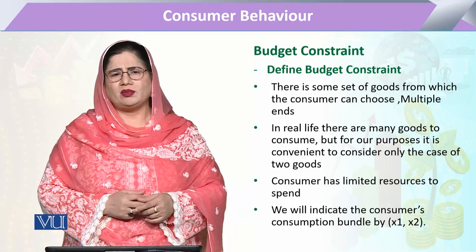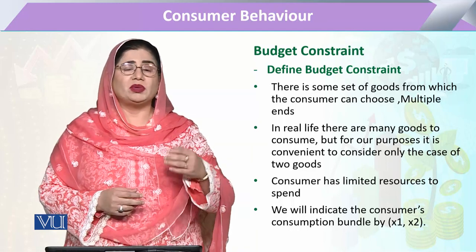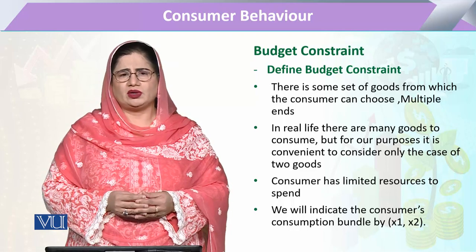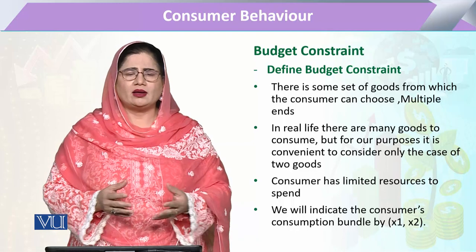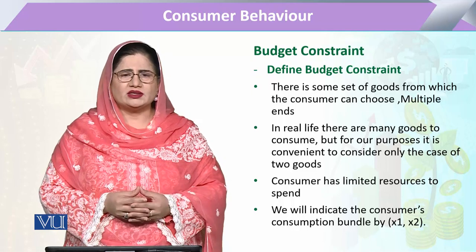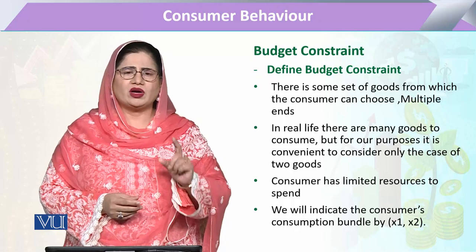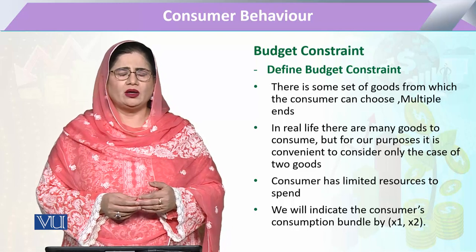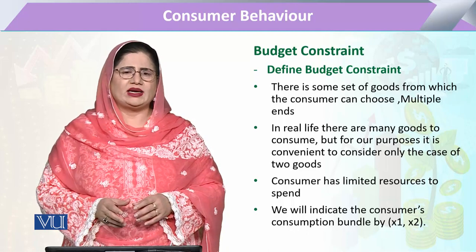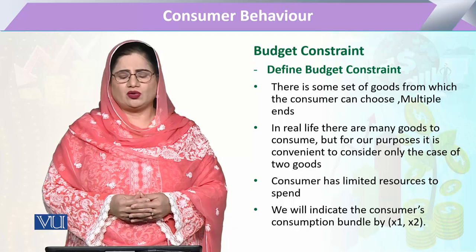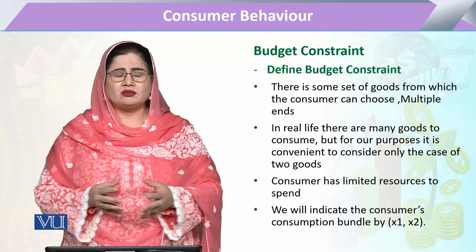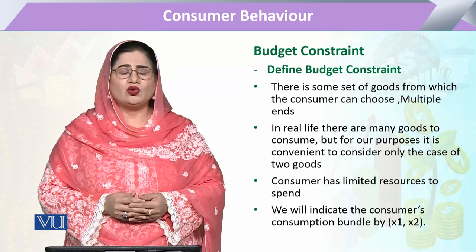But when we talk about the feasible set, the feasible set also involves a budget. The feasible set is related to opportunities. So if we say that given a budget, we have to limit our purchases in a certain way, then our feasible set is based on the budget — it was the combination of goods. So the feasible set is essentially the budget constraint. The budget constraint is basically a set of goods and services which we want to purchase.